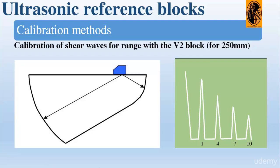For 250 mm calibration, we point the probe at the 25 millimeter radius arc on the V2 block and adjust until we get four echoes, representing 25, 100, 175, and 250 mm. We maximize the signals by sliding the probe forward and backward, then adjust the range and delay until the first echo comes one tenth of the way across the screen at position 1 and the fourth echo comes at the extreme edge of the screen at position 10.